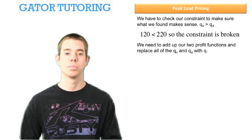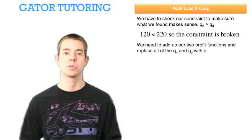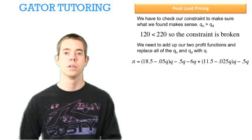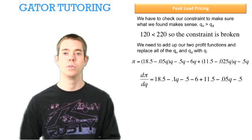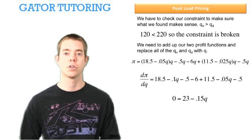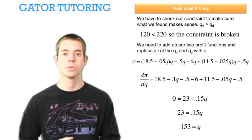We need to go back and replace all of our QN and QD with just Q. We're going to add up our two profit functions and erase the subscript. Now we take the derivative with respect to Q and set it equal to 0 to maximize profits. After combining like terms and dividing through by 0.15, we see that our optimal capacity is 153 seats.